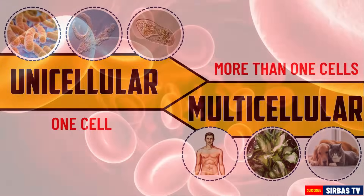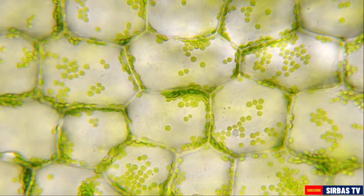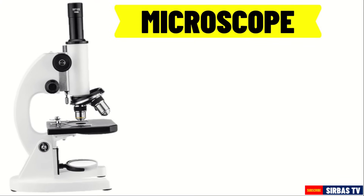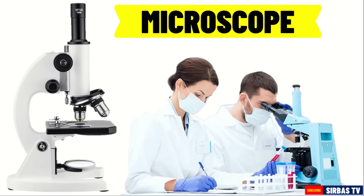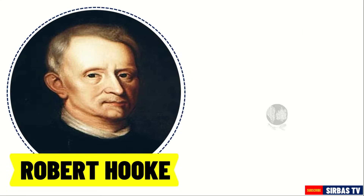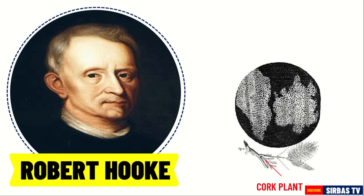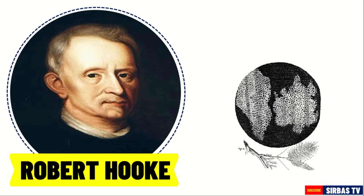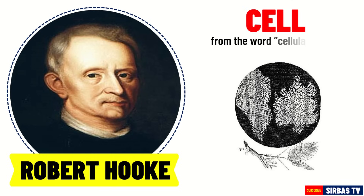Cells are too small to be seen by the naked eye. But thanks to the invention of a microscope, scientists were now able to study it in detail. The first person to describe cells using a microscope was Robert Hooke. When he examined a very thin slice of cork, he noticed structures that look like small, empty rooms. It reminded him of small rooms found in a monastery. Thus, he named these structures cells, wherein cell is from the word cellulae, which means small rooms. Let us now explore the different parts of a cell.